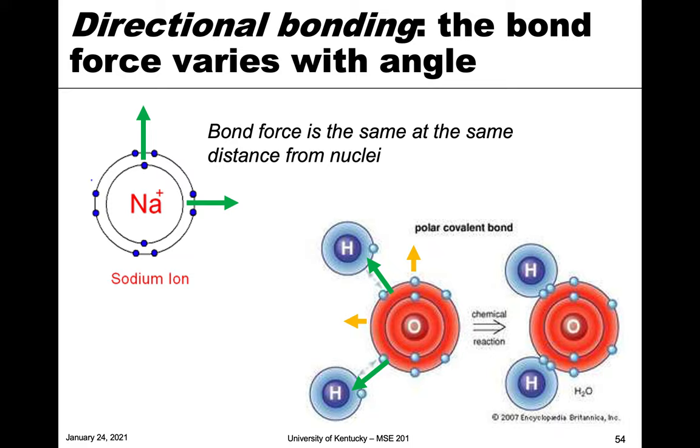So again, the directional bonding means that the bond force varies with angle. So if we look at the other, if we go back to ionic bonding now, if we've created a sodium ion, the bond force is the same here as it is here because it's only a function of radius. So it doesn't matter where as long as it's at the same radius and charge. So the charge is equal throughout. This whole thing is net plus one. So the bond force is equal here and here.